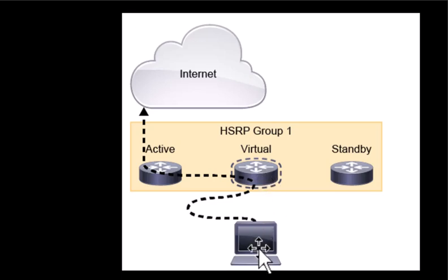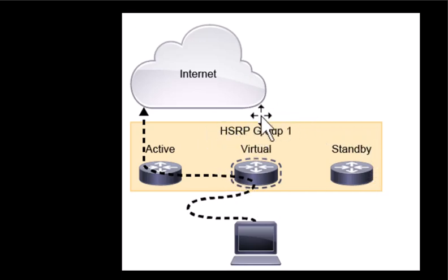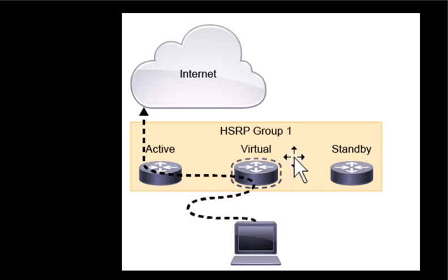This way you can avoid longer network outages. HSRP is a Cisco proprietary protocol, so it can be configured on Cisco routers only. If you want to configure similar functionality on other vendor devices, that is called VRRP — Virtual Router Redundancy Protocol — which does the same function as HSRP.